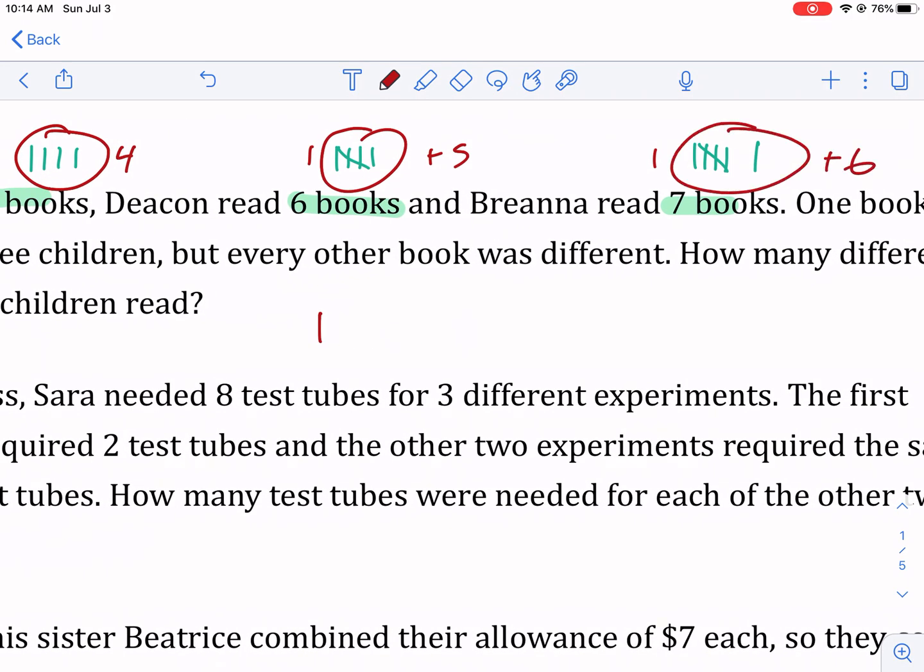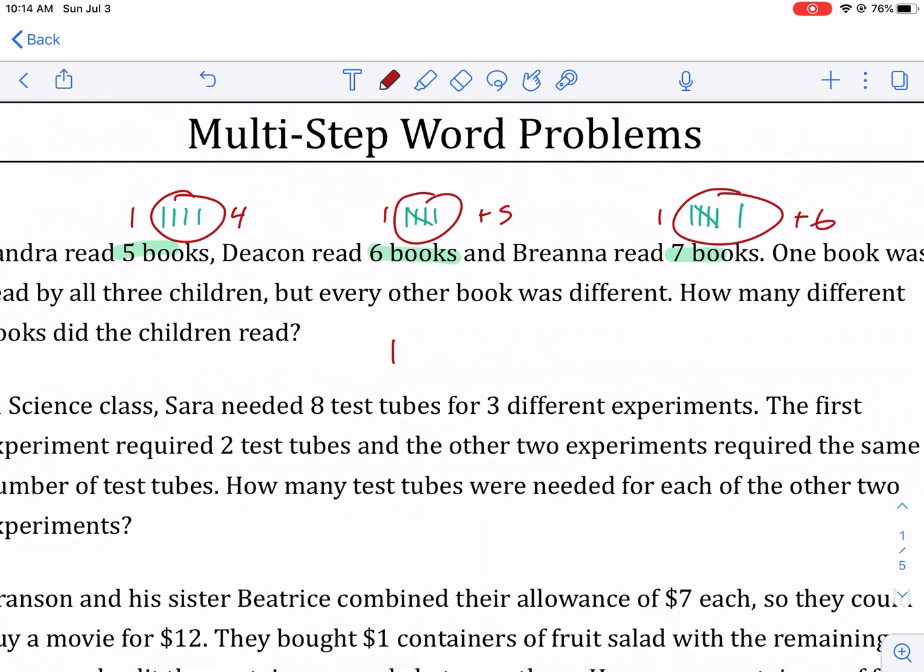books read by Brianna. So then we're going to do one, that was that one read by all three, plus four, plus five, and then plus six. And that's going to give us our answer, which is 16 different books. So that's number one.